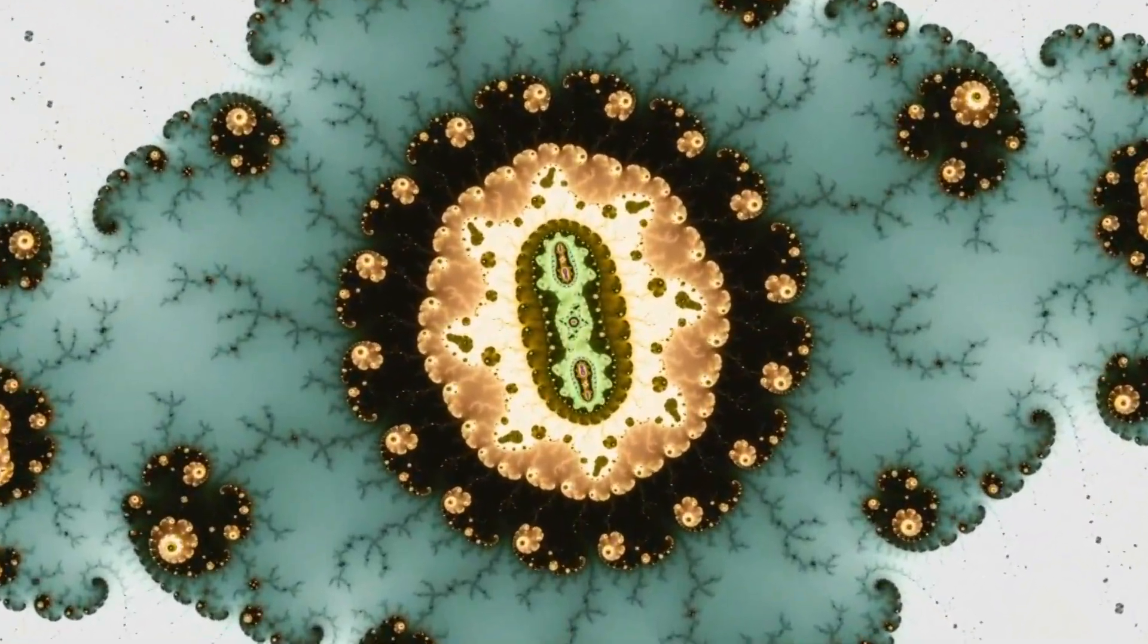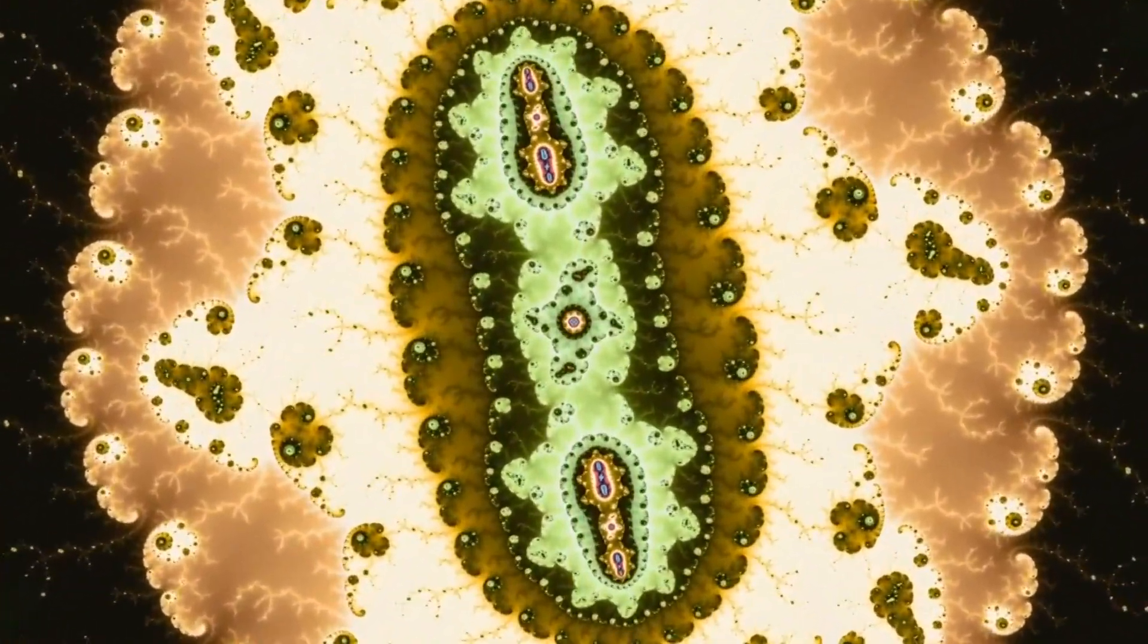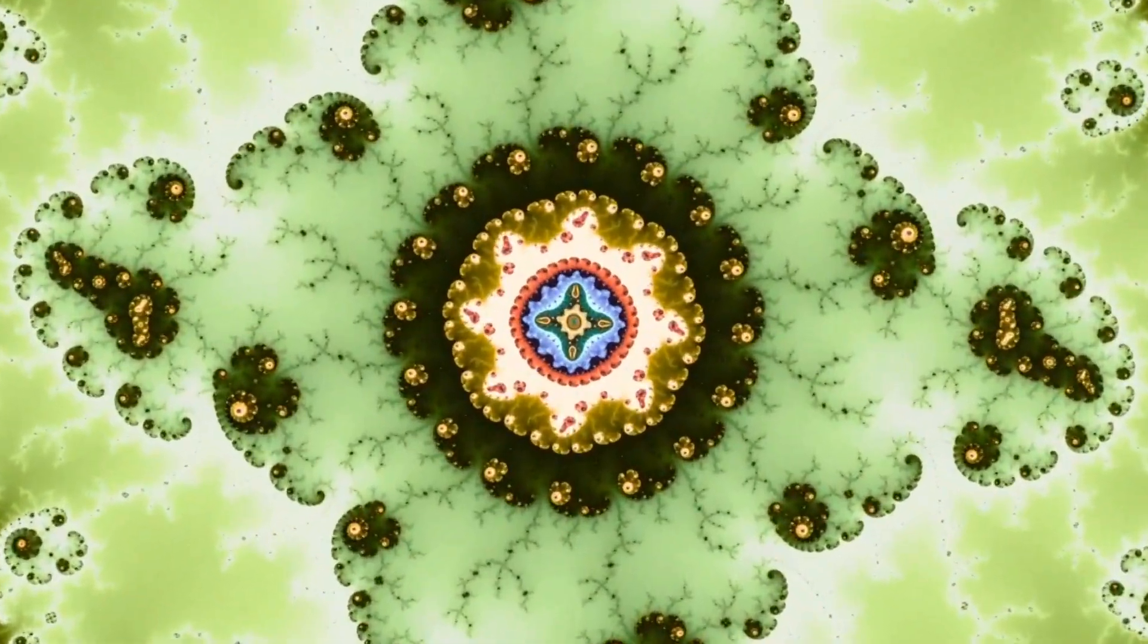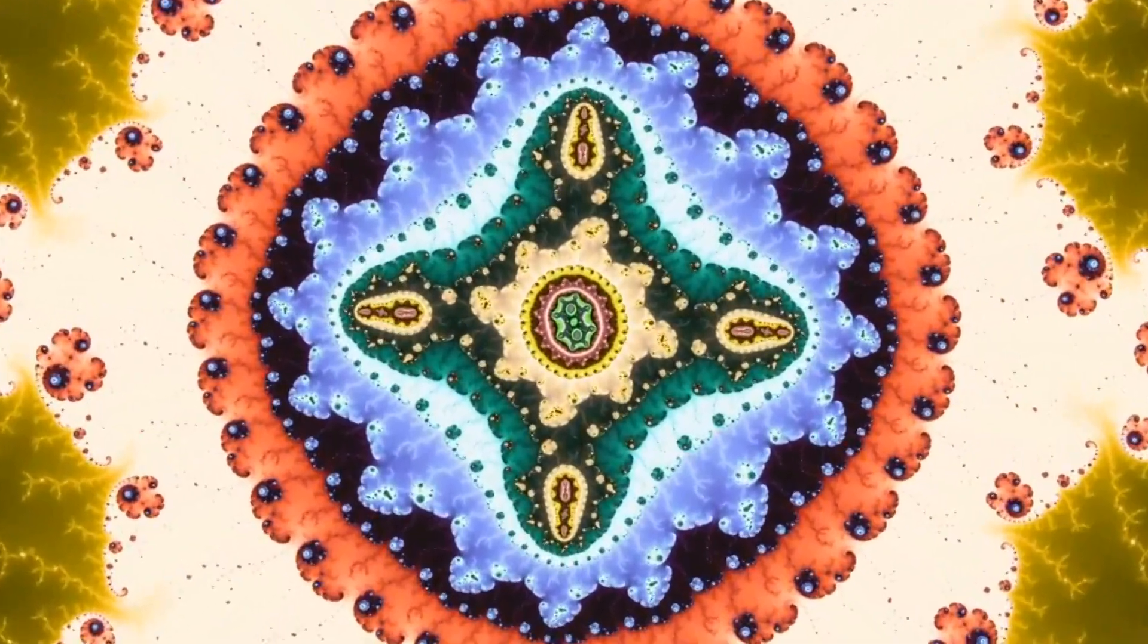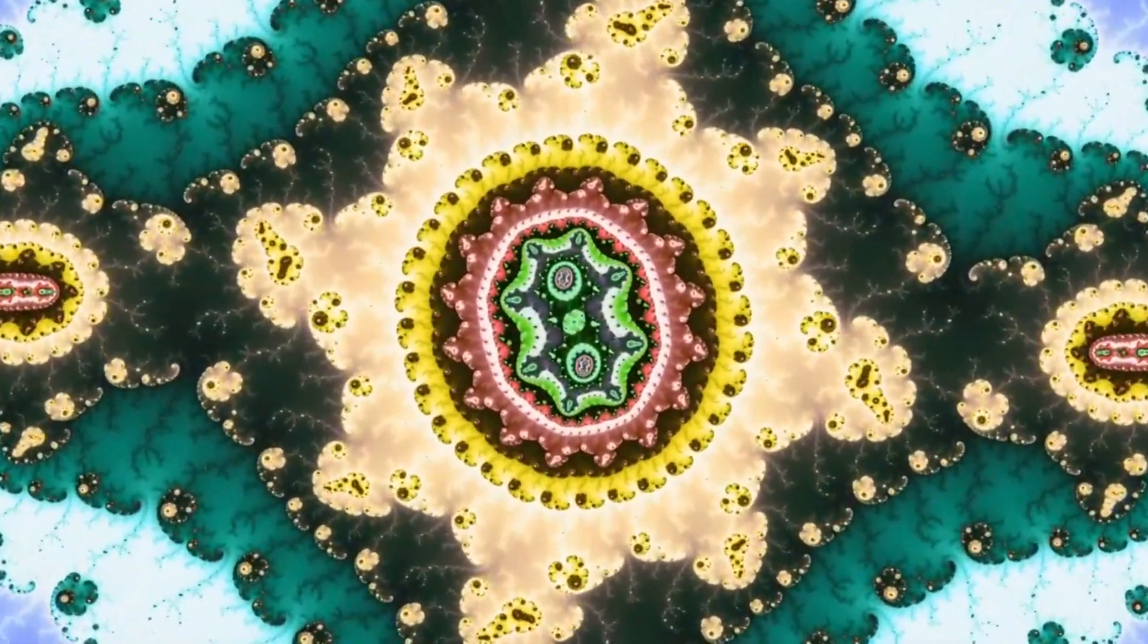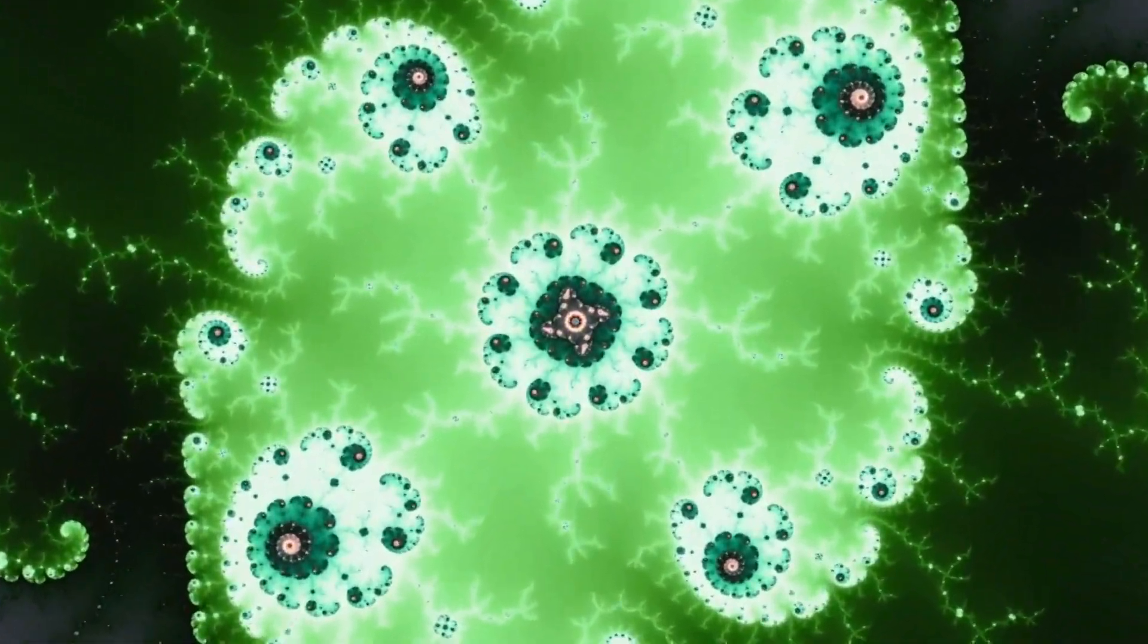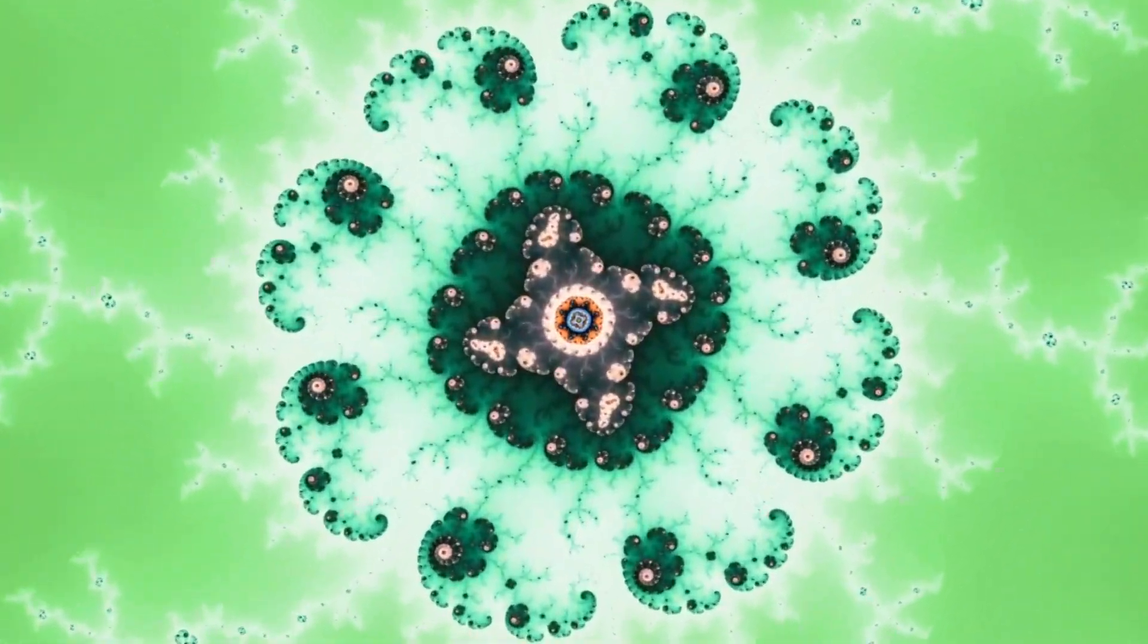So when someone approaches you with a fractal model of reality disguised as a jumbled, random mess of particles bumping into each other, it doesn't necessarily throw up any red flags. The universe is fractal, it is self-similar across different scales, but that does not mean planets orbit stars in the same way as electrons orbit atoms.